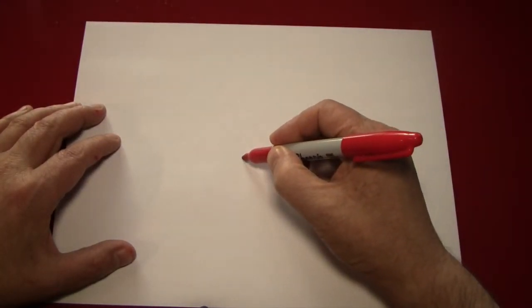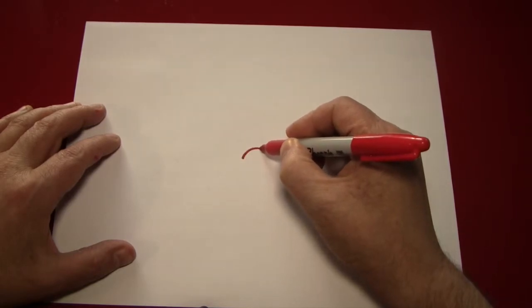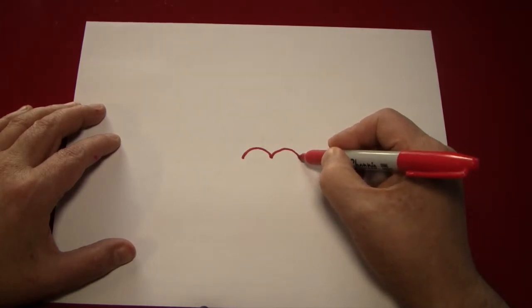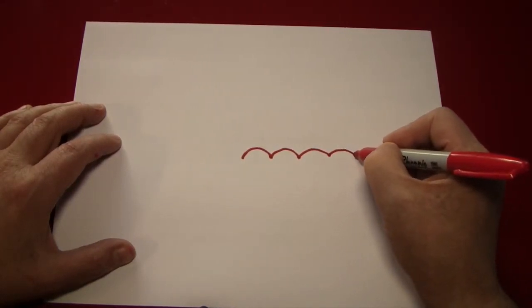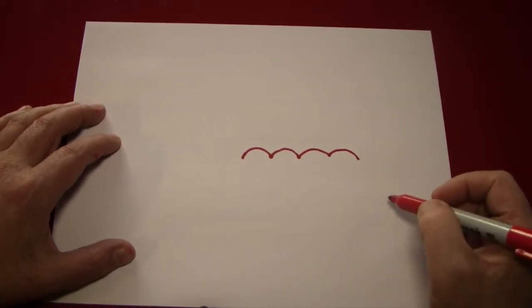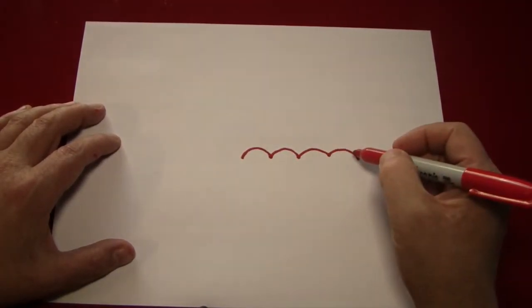Now, to draw our spider web, we're just going to find the general center of the page, and we're going to make a curve, like this. Then repeat it, and again, and again. Now we've made a line out of curves.